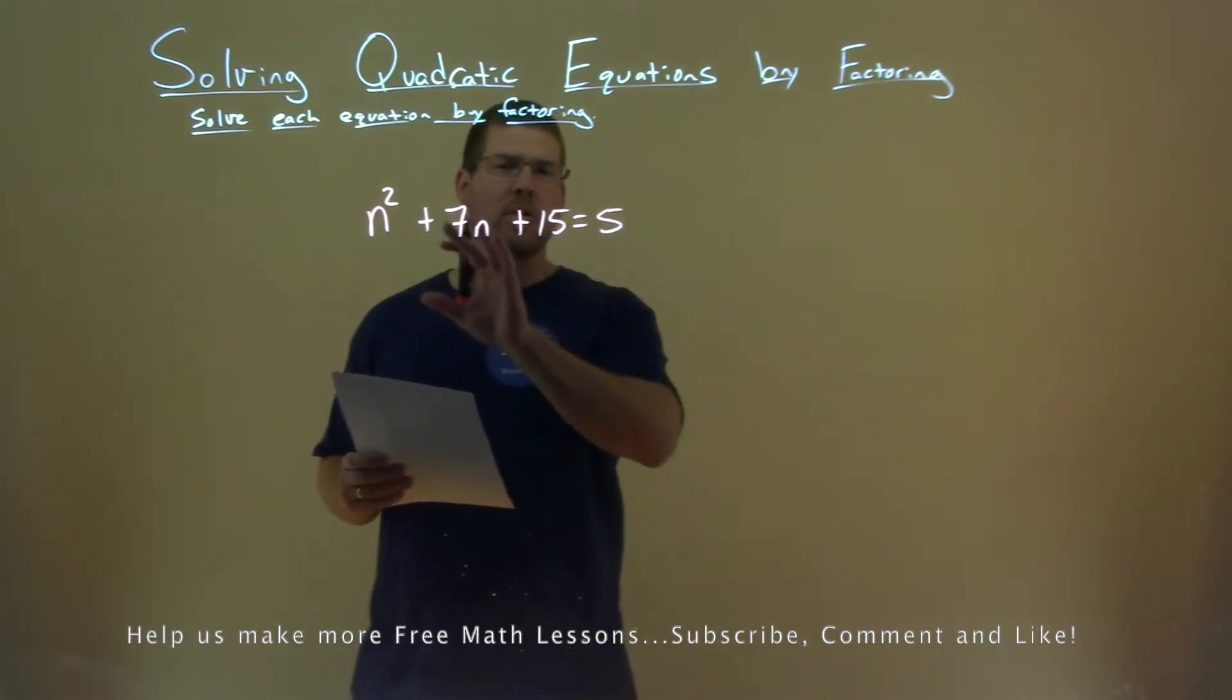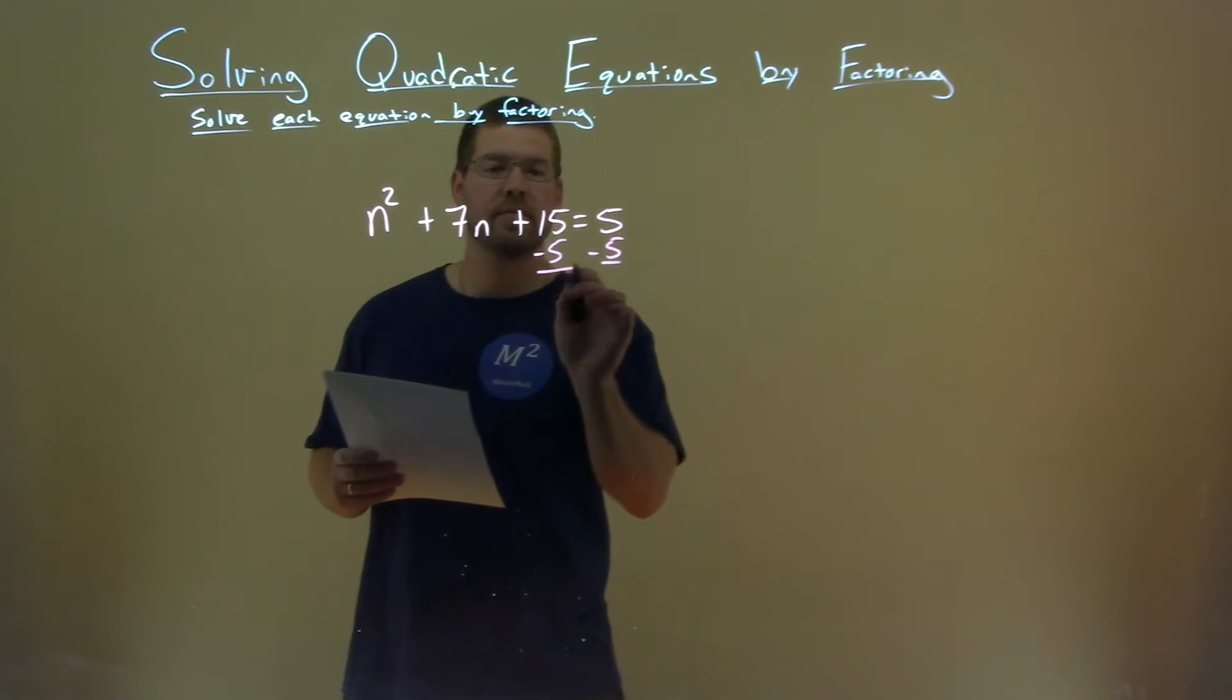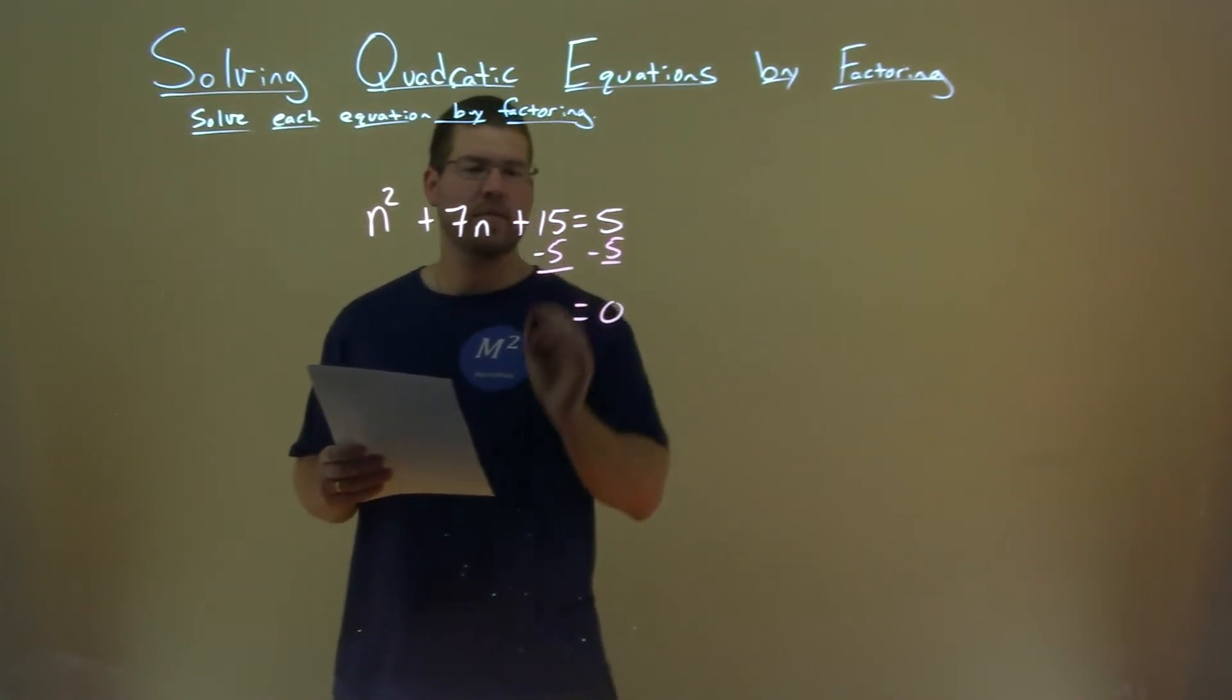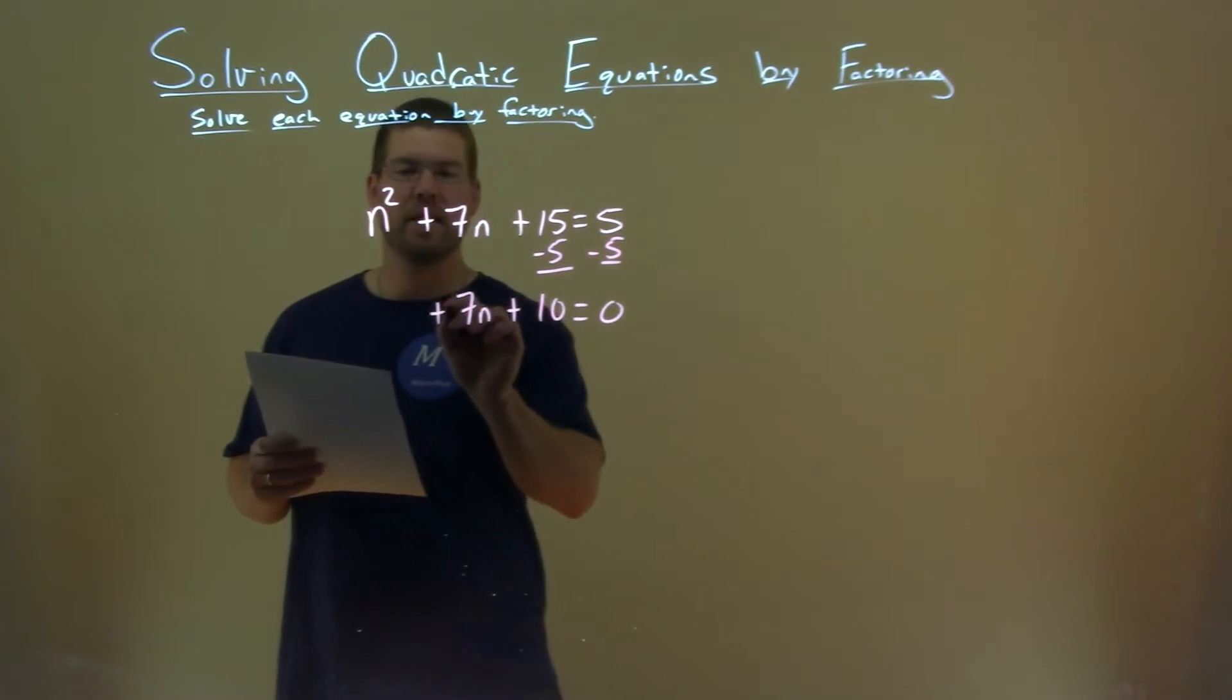We need to make this whole equation equal to 0, so I'll subtract 5 from both sides. That equals 0; 15 minus 5 is 10, and we bring down the other parts, the 7n and the n squared.